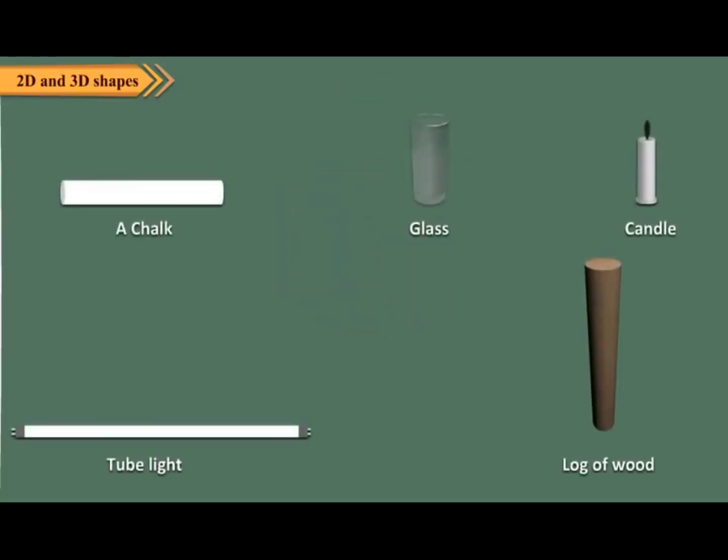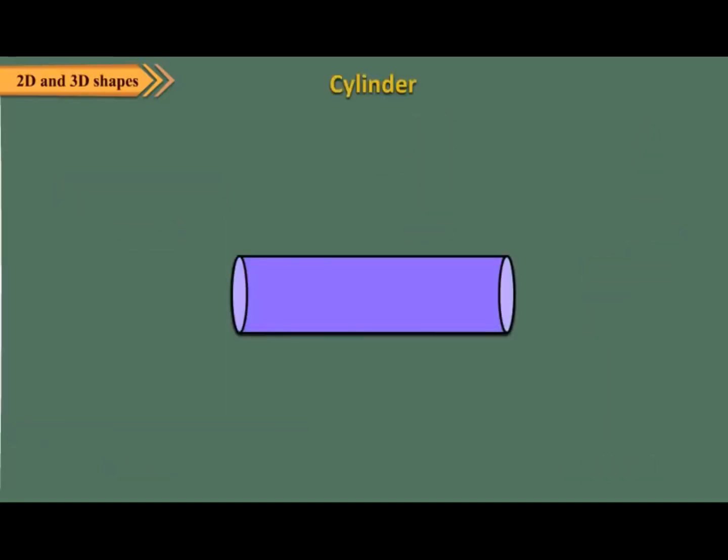Students, we have seen all the objects shown here in our daily life. All these objects have the shape of cylinder. A cylinder has no vertex. It has two curved edges and three faces. One face of cylinder is a curved face. Two faces, that is top and bottom of a cylinder, are flat.